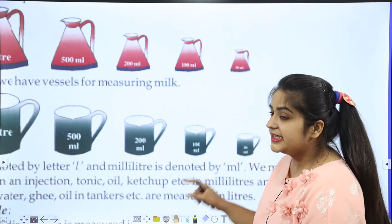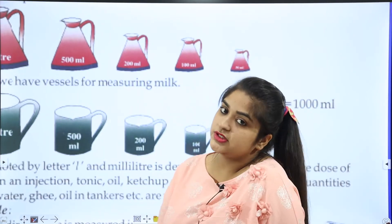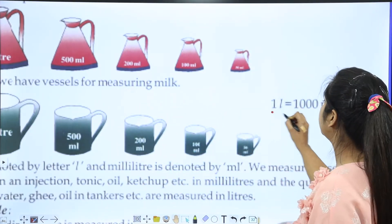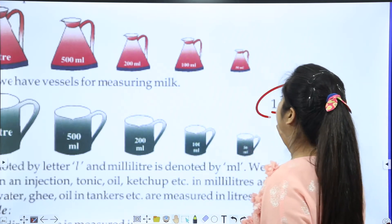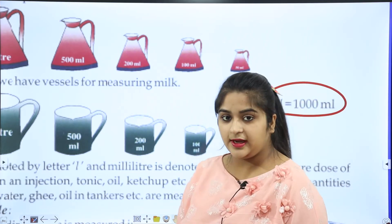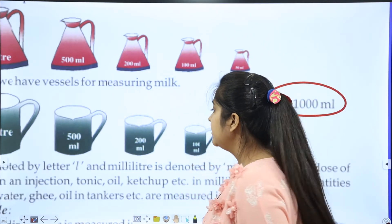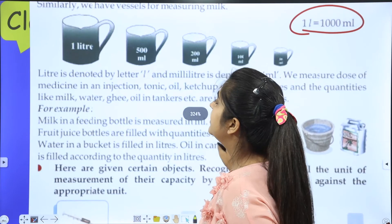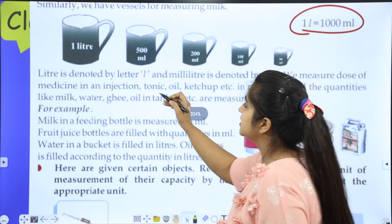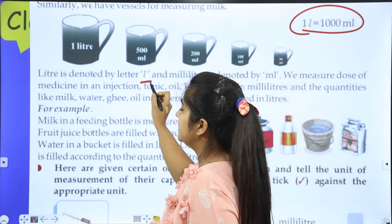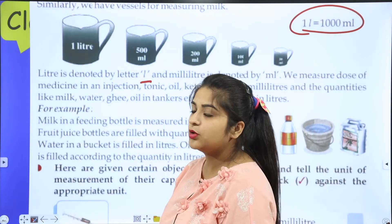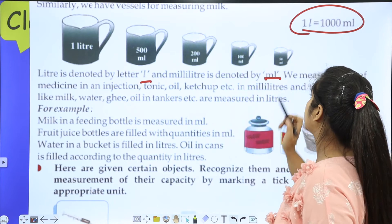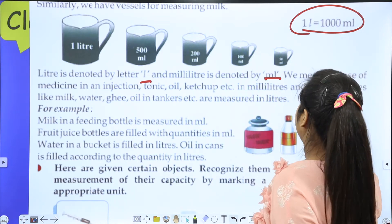Just like 1 kg has 1000 grams, there are 1000 ml in 1 liter. Liter is denoted by L and milliliter is denoted by ML.